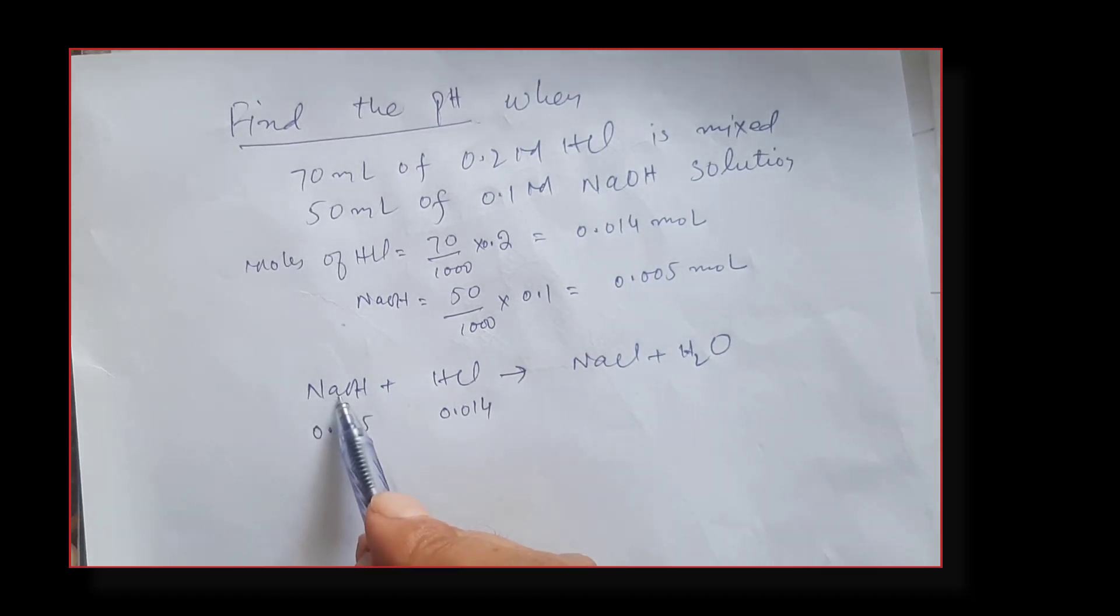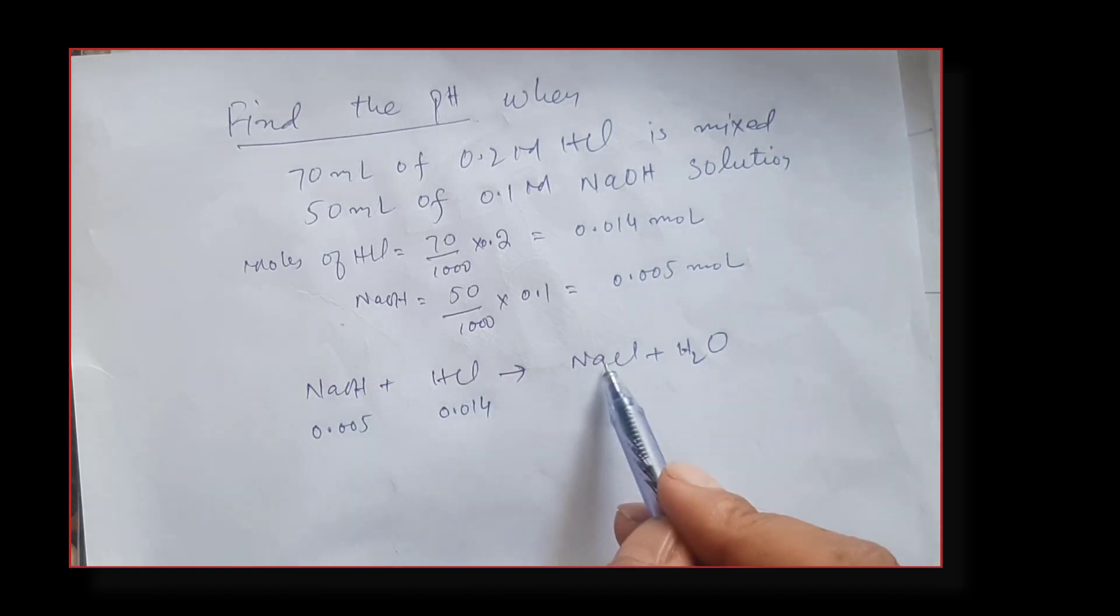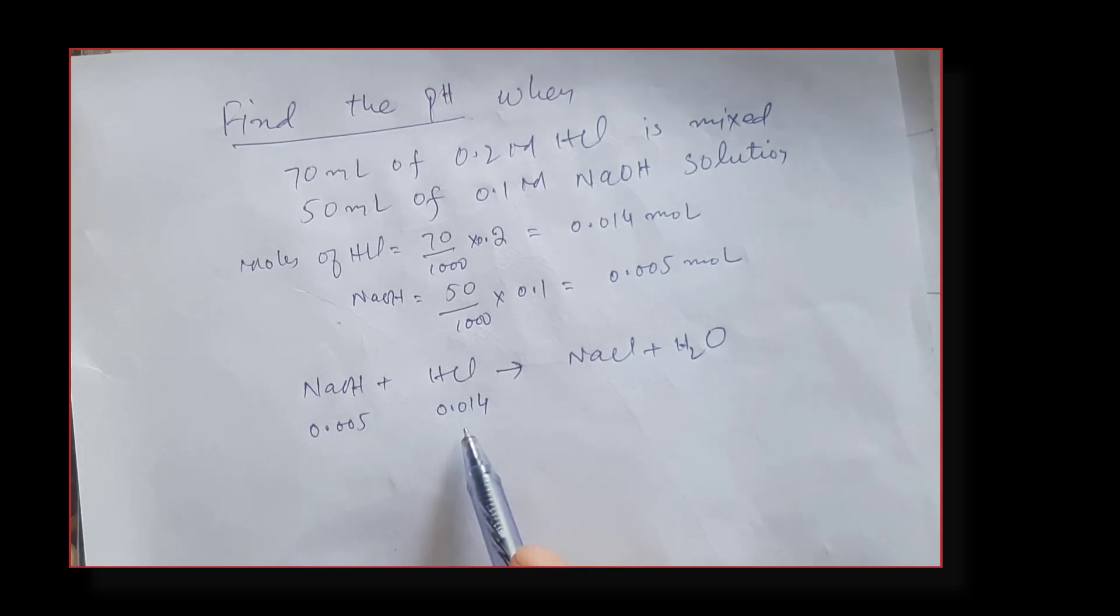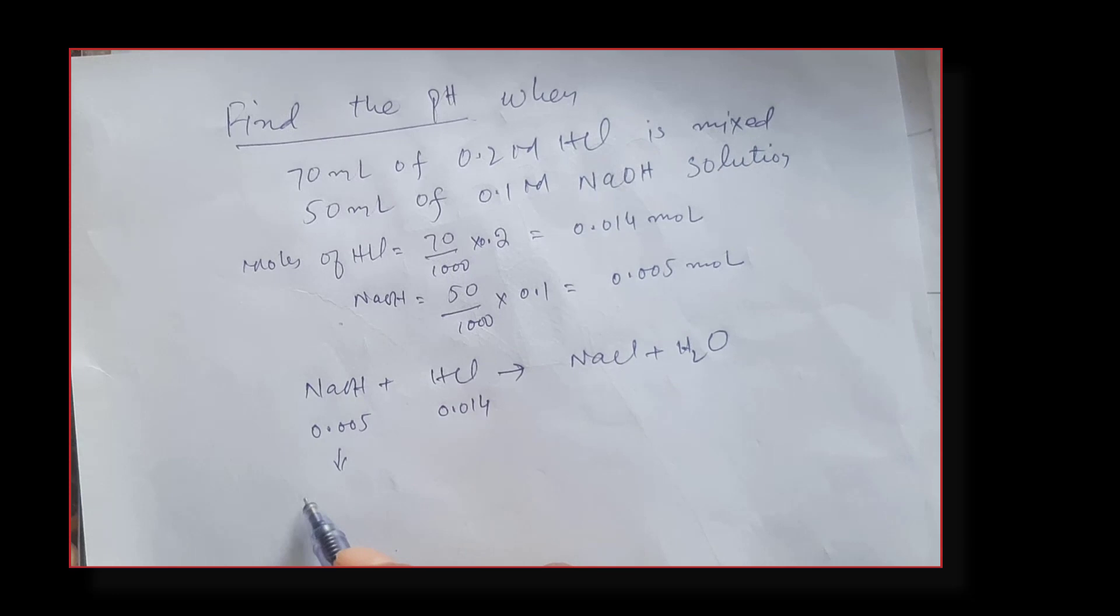If one mole of sodium hydroxide reacts with one mole of HCl, we get one mole of sodium chloride and one mole of H2O. Now look at the number of moles involved. You can easily see that the moles of sodium hydroxide are less than HCl, which means sodium hydroxide is acting as the limiting reagent.